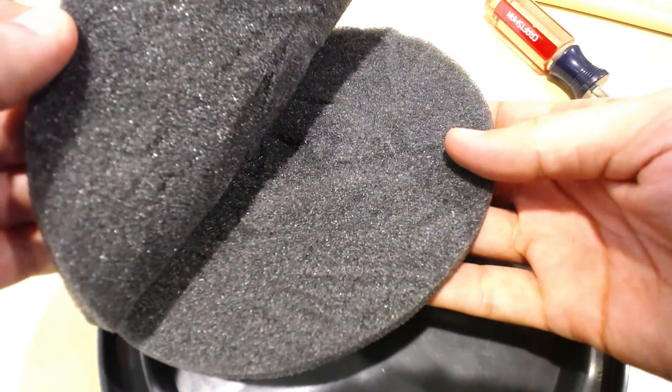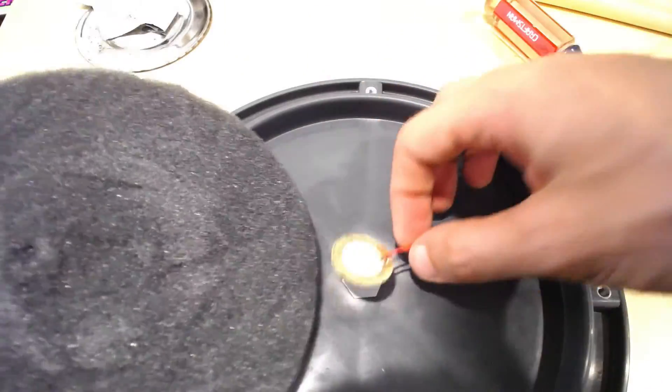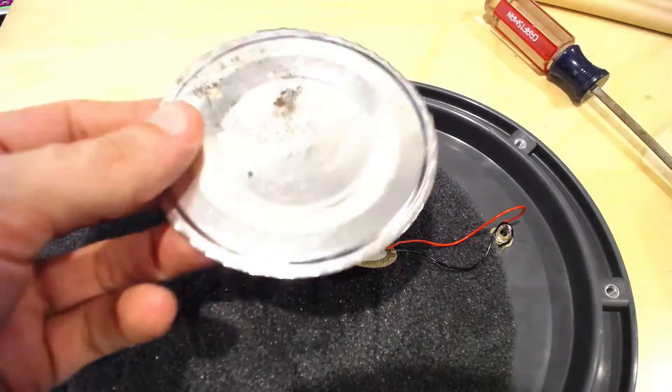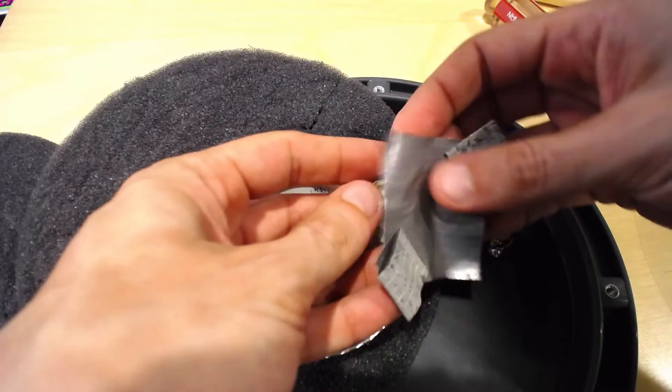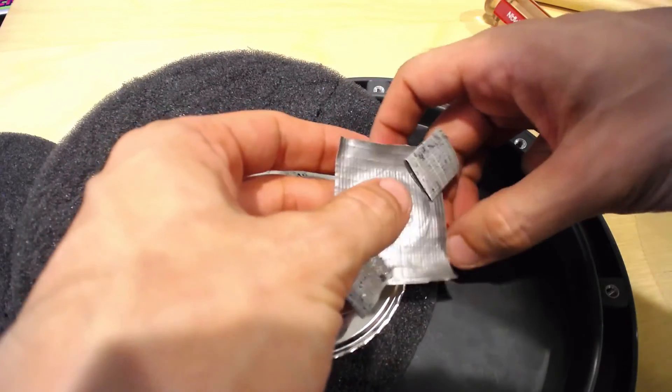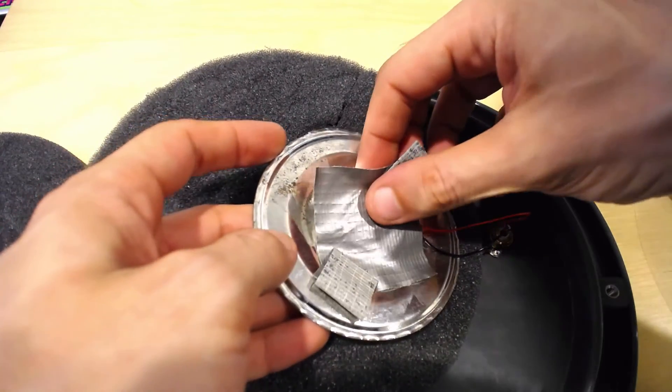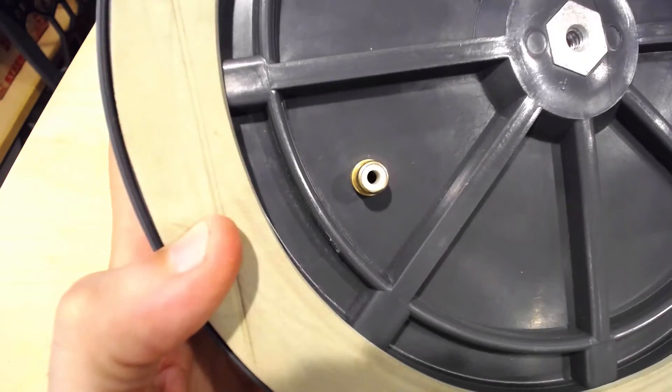If we slice that piece of foam in half, we can slide a piezo into the center. This works much better if we spread out the surface area of the contact element, so taping or gluing the piezo to the center of a coffee can lid or something of that nature can greatly increase the sensitivity of the pad.